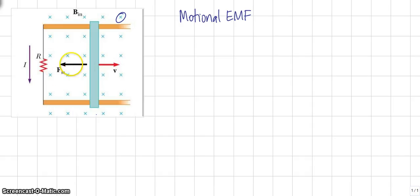What we want to find out is what is the current developed in the circuit. First you may ask yourself, why is there current developed in the circuit? Because this bar is sliding to the right through this magnetic field.